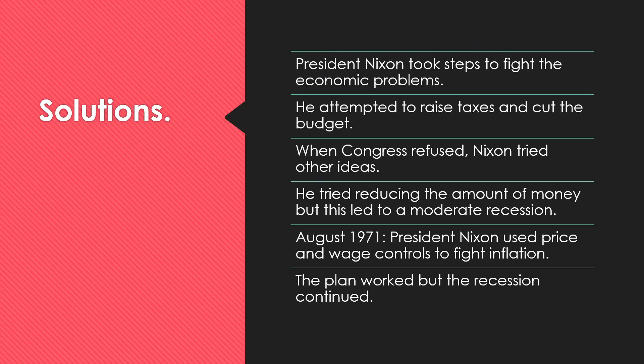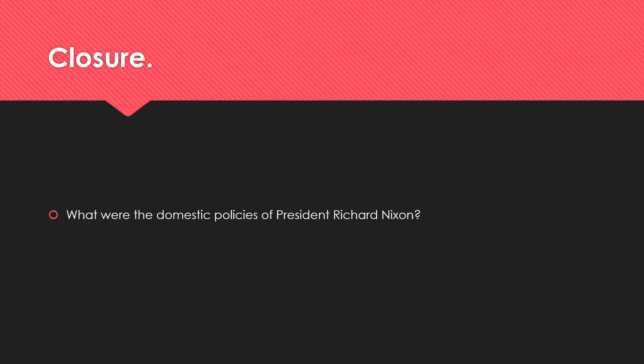President Nixon did take steps to fight the economic problems. He attempted to raise taxes and cut the budget, but Congress refused. He tried reducing the amount of money in circulation around the country, but this led to a moderate recession. Finally, in August 1971, President Nixon used price and wage controls to fight inflation. This plan did work, but the recession did continue for a little bit.